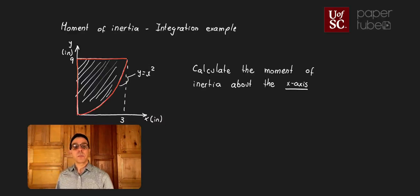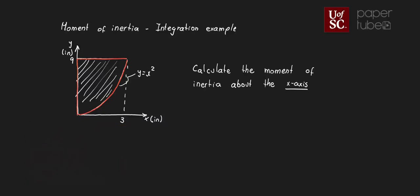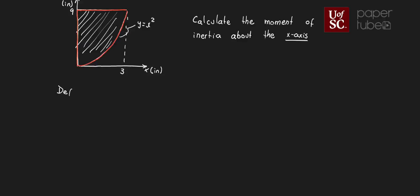The first thing I'm going to do is I'm going to define a differential of area. Let me close the camera so I can have a little bit more space to work with. So I'm going to define my dA. Because as we remember, my moment of inertia about my x-axis is defined as my y squared dA.